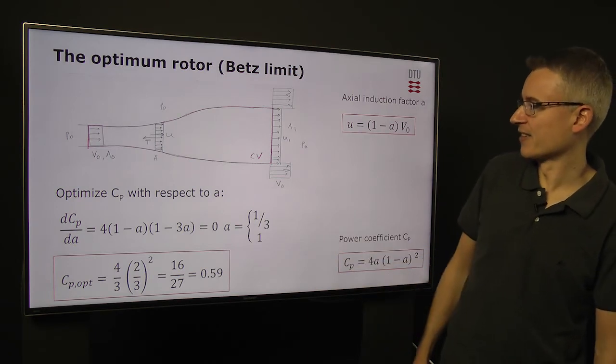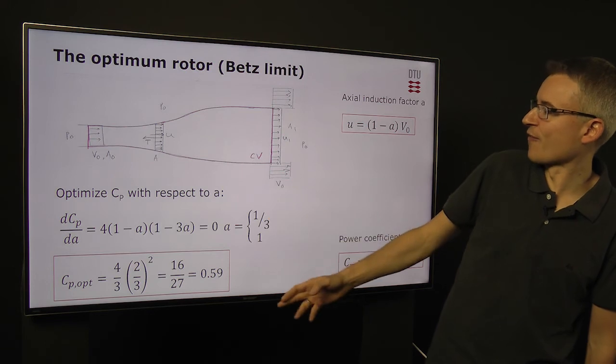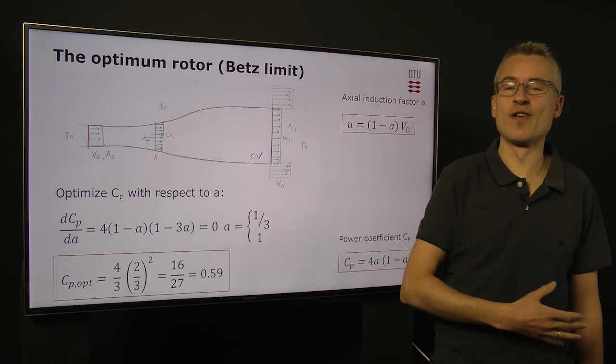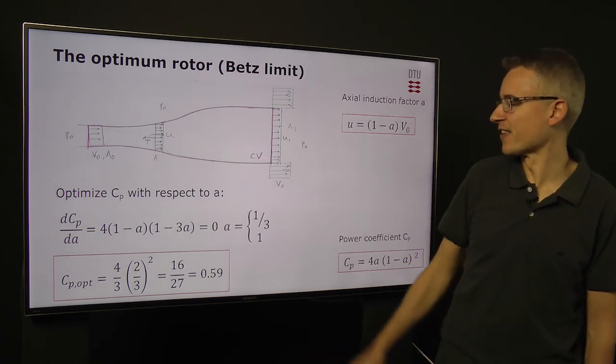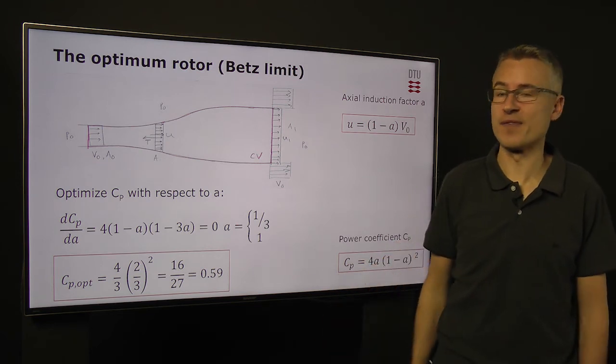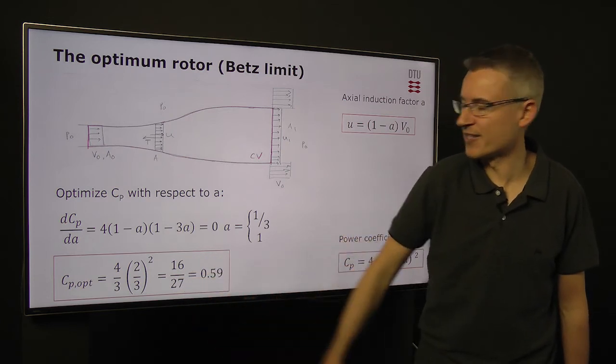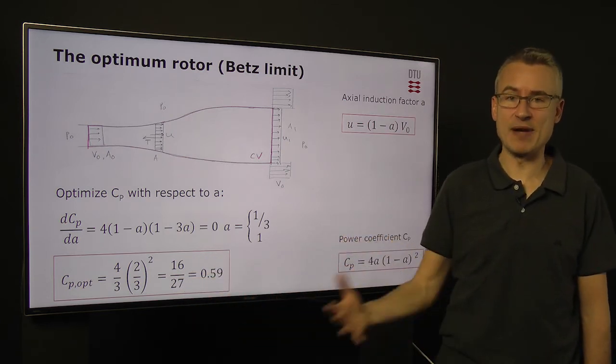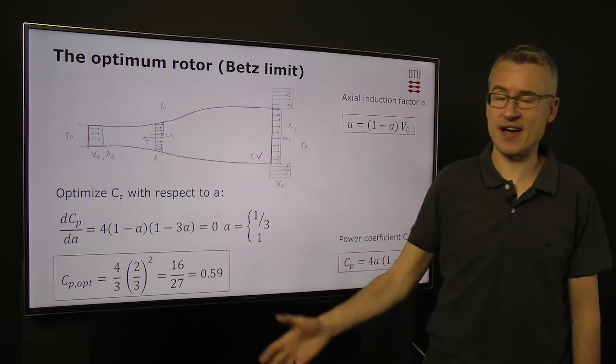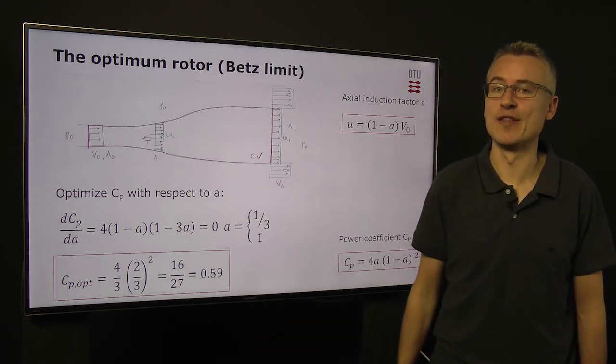We can do that by differentiation, so dcp da is written here. It has a zero value for a equal to 1 third and 1. 1 means no energy at all, it's a minimum, so not relevant. Our interesting optimum is the 1 third, which is the one that gives us the maximum power. At that value, cp is 16 divided by 27. This is called the Betz limit, so it tells us that the best performance we can have from an ideal wind turbine is to extract 59% of the available energy in the wind.